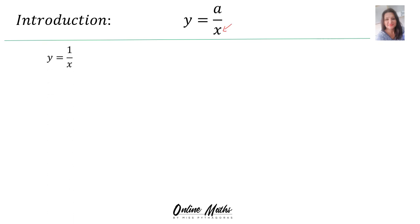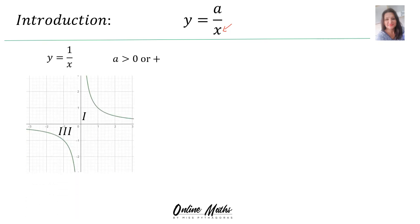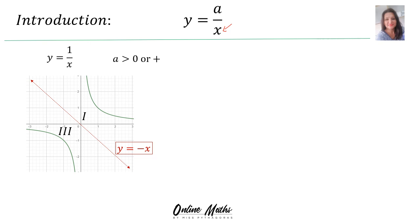When I give you y is equal to 1 over x, then a's value is greater than 0, or positive. That means your hyperbola will lie in the first and the third quadrant. Something also very important is this red line — that is called the line y is equal to minus x, and we say the hyperbola is symmetrical about the line y equals minus x.